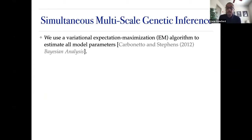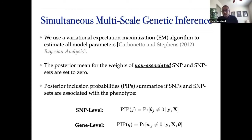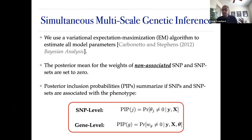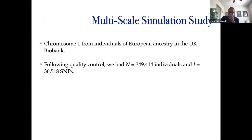In practice, we use a variational EM algorithm to fit this model and estimate all parameters, derived and tweaked from a paper in Bayesian Analysis. The posterior mean for weights of non-associated SNPs is set to zero for sparsity. Variable selection is performed using posterior inclusion probabilities — the probability that any given weight is non-zero. The gene-layer enrichment is conditioned on which SNPs are included, so SNP sparsity also informs which SNP sets should be included.